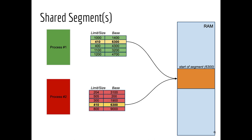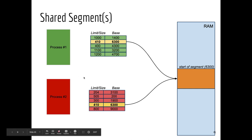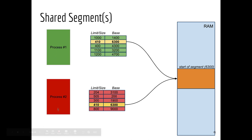Using shared memory (like shmget, shmat, shmdt), two different processes — green and red — can share the same memory segment. Each process has its own segment table, but both segment tables contain a common entry pointing to the same physical segment. For example, the second segment of green at physical address 6300 is the same physical segment as the fourth segment of red.